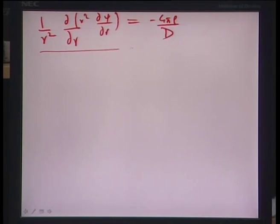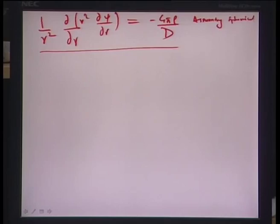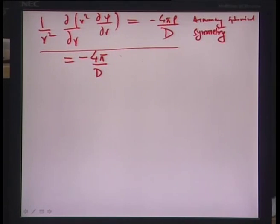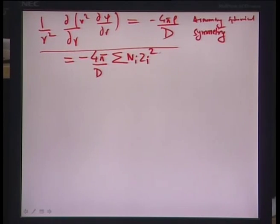Assuming spherical symmetry — as if these potential functions are like shells around the small positive charge of interest — the final Poisson's equation boils down to (1/r²) ∂/∂r (r² ∂φ/∂r) = −4π rho / D. The potential function's variation is purely with respect to the radius vector r.